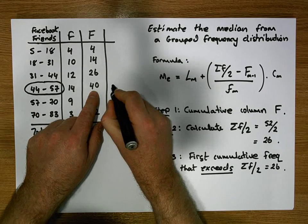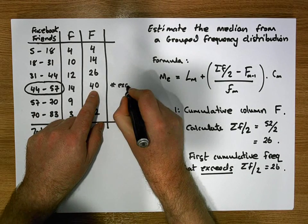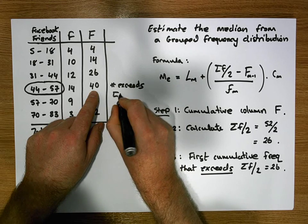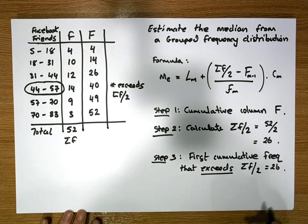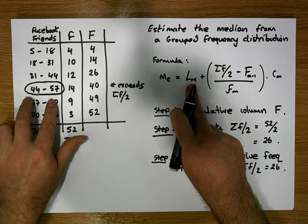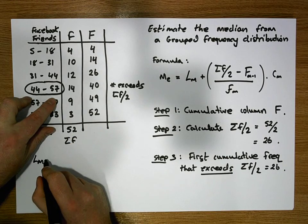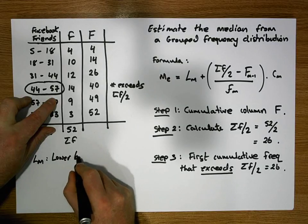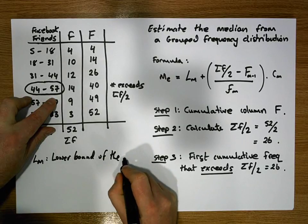So this is the first value here that exceeds sigma F over two. So now we know what L of M is. L of M is the lower bound of the median class.